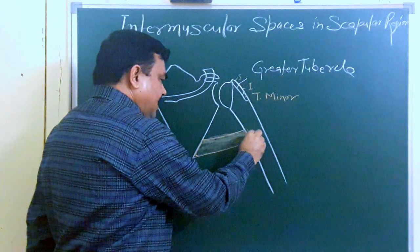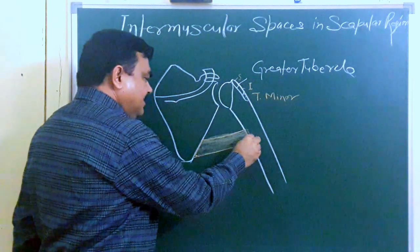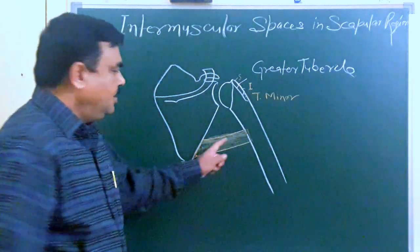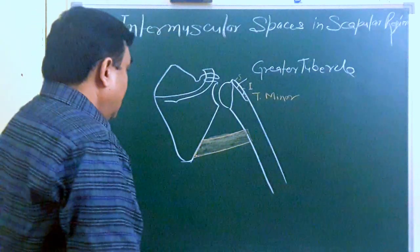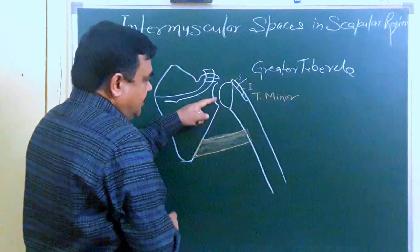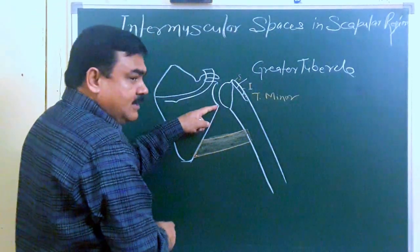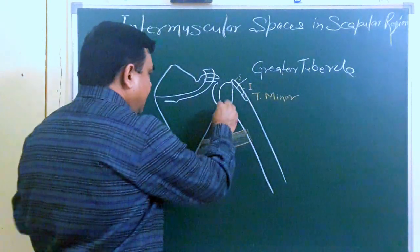This muscle inserts here at the medial lip of the bicipital groove. And this is the infraglenoid tubercle — the long head of triceps takes origin from here.